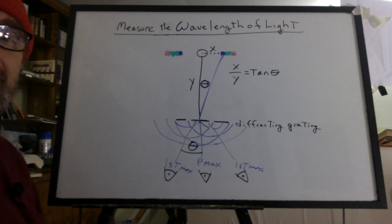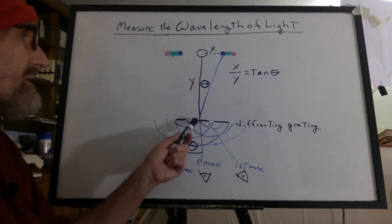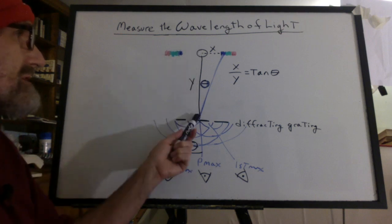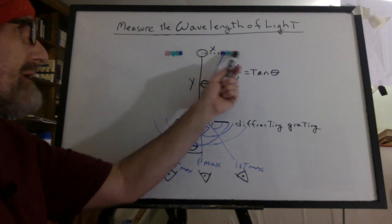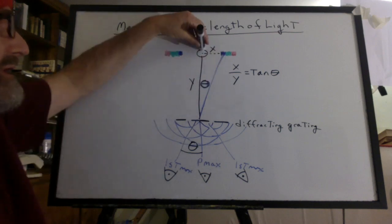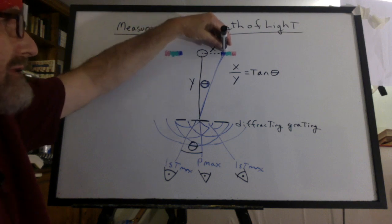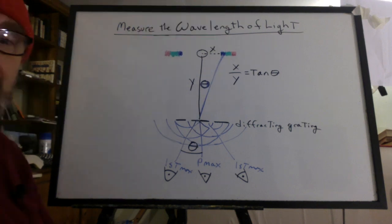Inverse tangent will get us theta. Now, how are you going to measure x and y? Well, you can lay out a meter stick and measure this distance and then lay a meter stick out this way. And you can measure the x distance out to the blue light by just putting an object out here and moving it over until you get there. And then you can see where it is on the meter stick.